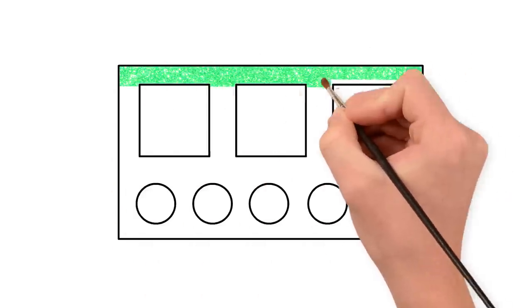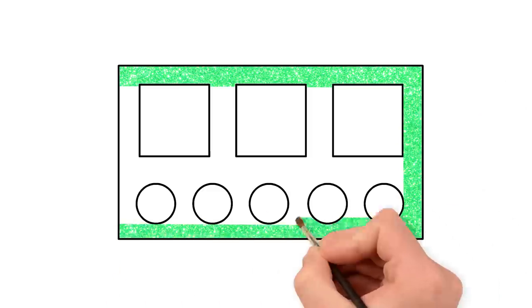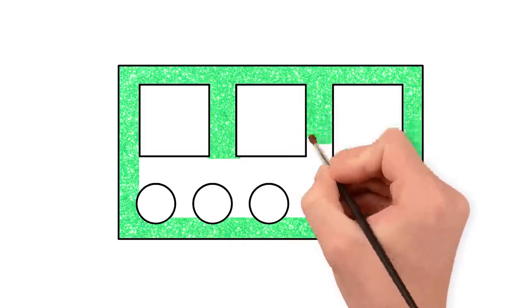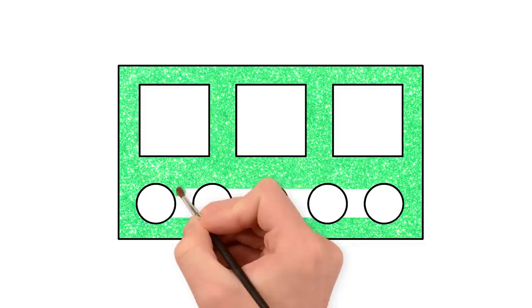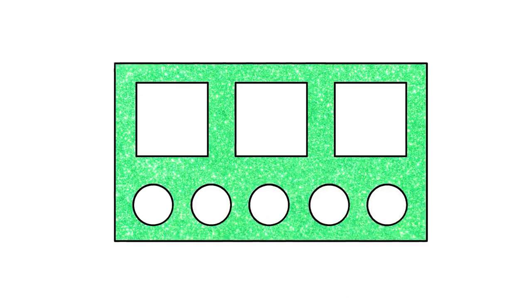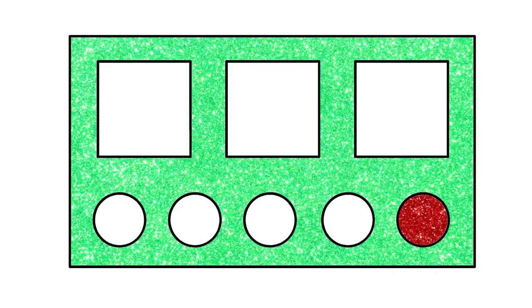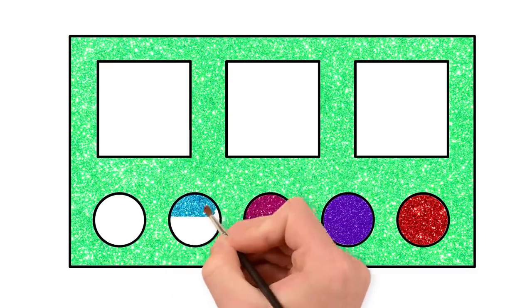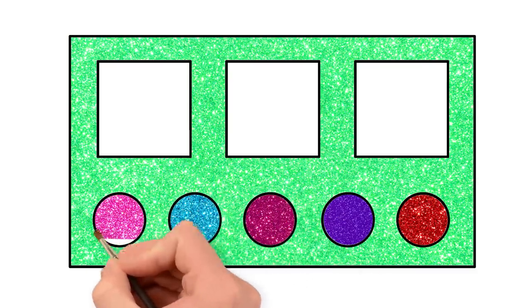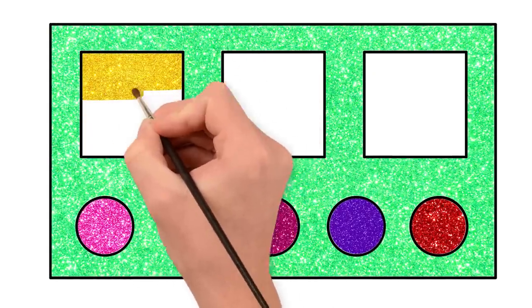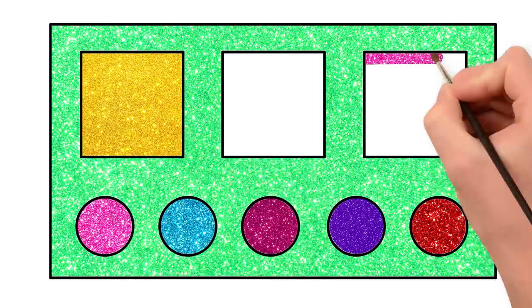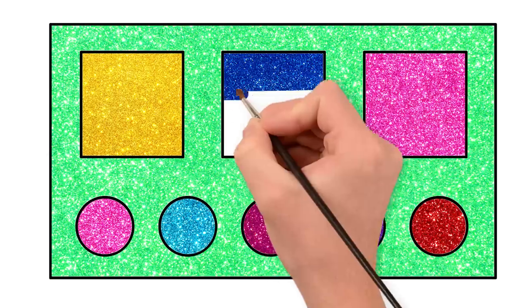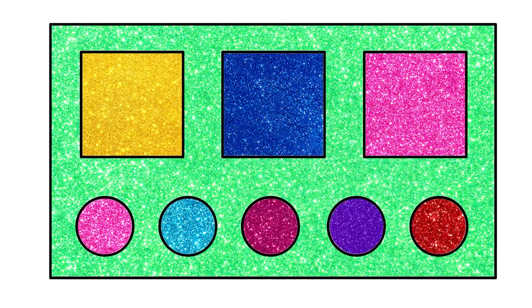Let's paint with green. The first circle with red. Purple is next. Magenta. Sky blue. And pink. Let's paint the square with gold. Pink. And blue. This looks great. Lovely eyeshadow. Yay!